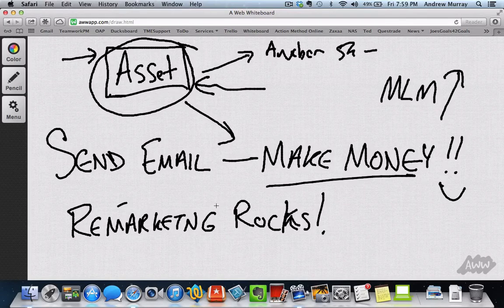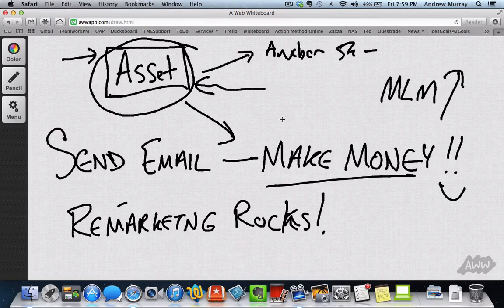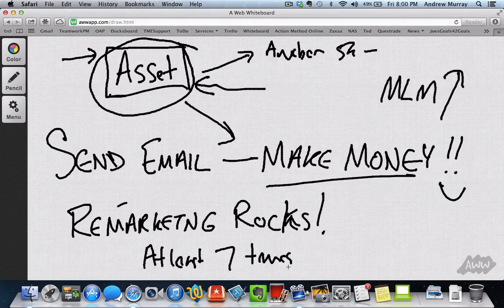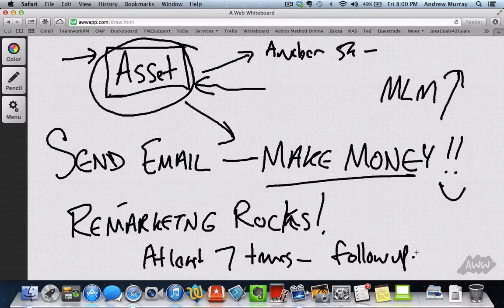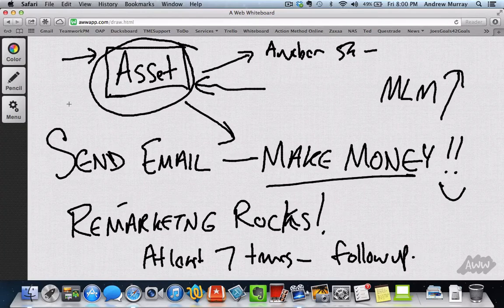And we already know that people need to see an offer at least seven times before they actually start to take any action, or they even start to really consider it. So think of your list not only as an asset that makes you money, but it really is your automatic follow-up also. You really start to become much more efficient as a business once you start to create and grow a list.